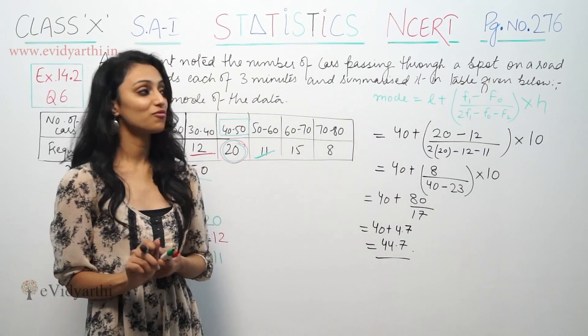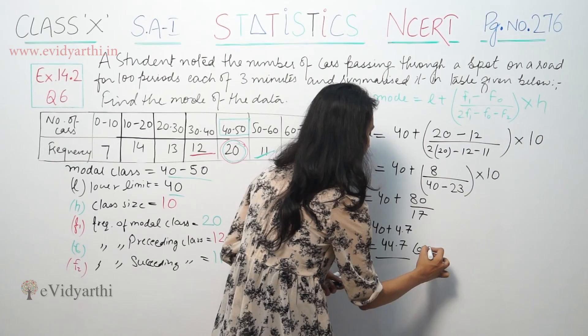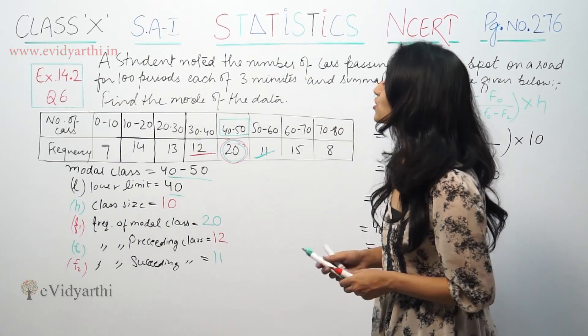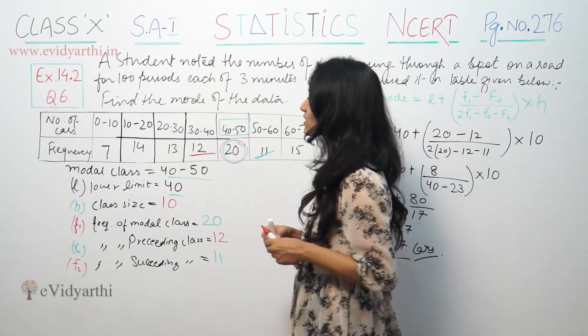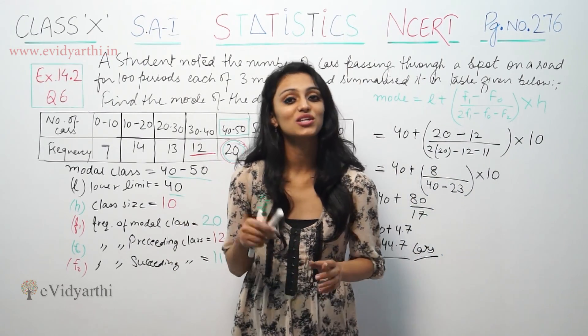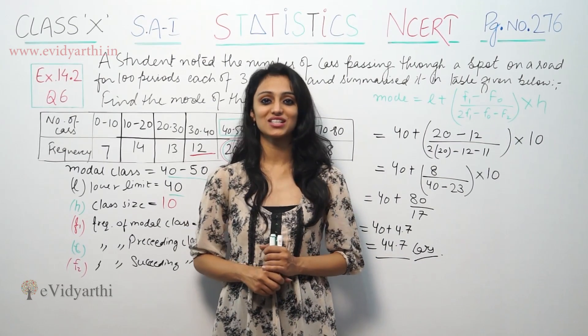This is the mode of the data, 44.7 cars. This was the question on statistics, exercise 40.2. If you have any doubts, please do write to us. Do watch the next video for some more questions. Goodbye.